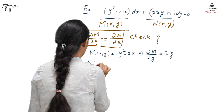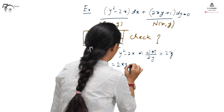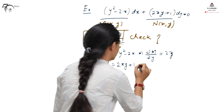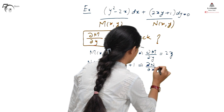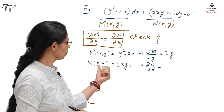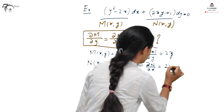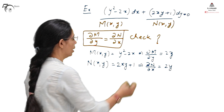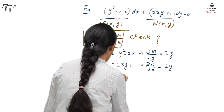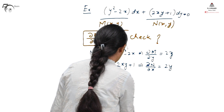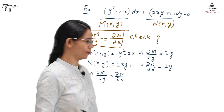When we find the derivative of N with respect to x, we get ∂N/∂x: differentiating N = 2xy + 1 with respect to x, y is treated as constant, giving ∂N/∂x = 2y. We see that ∂M/∂y equals ∂N/∂x, and therefore the given differential equation is an exact differential equation.